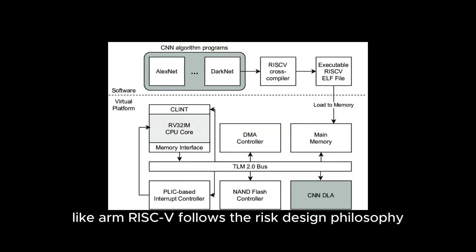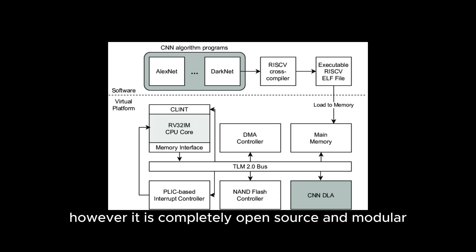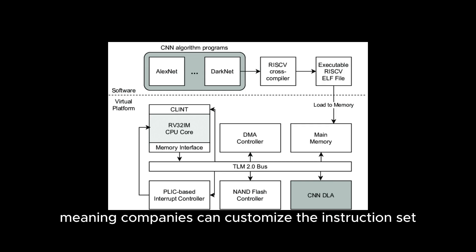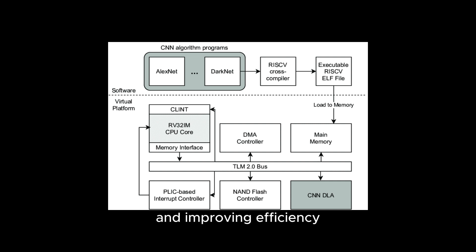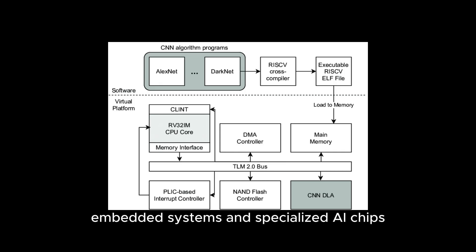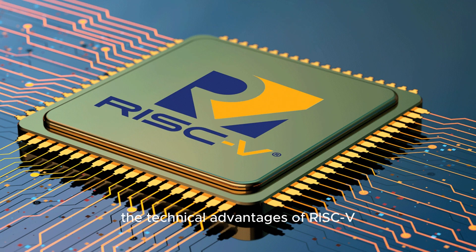Like ARM, RISC-V follows the RISC design philosophy. However, it is completely open source and modular, meaning companies can customize the instruction set to fit their needs, reducing unnecessary complexity and improving efficiency. This makes it ideal for low-power devices, embedded systems, and specialized AI chips.